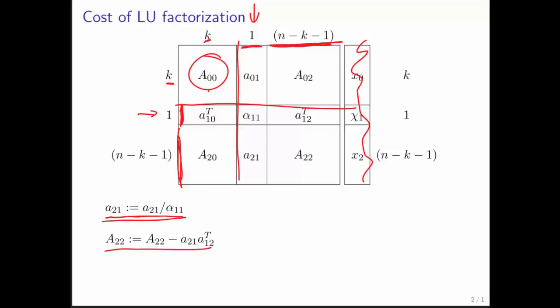This right here is typically implemented as 1 over alpha 1 1 because a division is actually very expensive, so you want to do it once. Then you take the result of that and you multiply it times the vector a 2 1. Let's ignore the division and instead focus on all of these multiplies. A 2 1 has n minus k minus 1 components, so we are performing n minus k minus 1 floating point operations here.